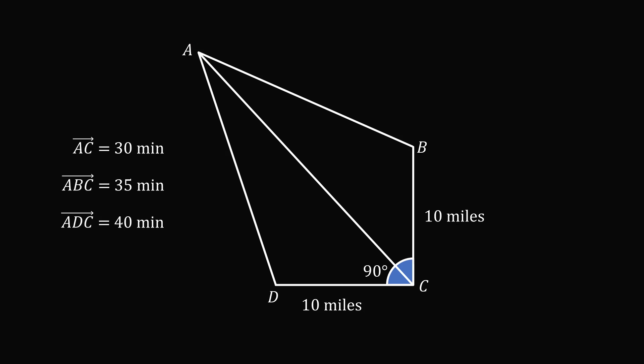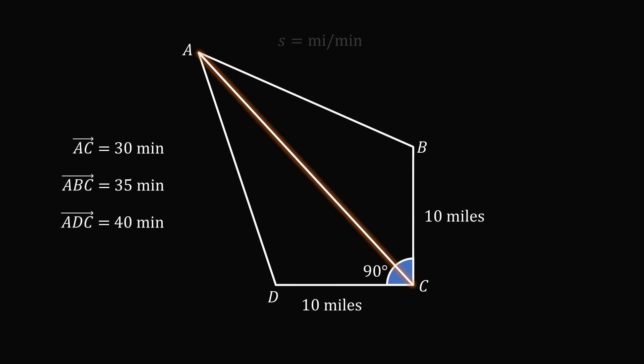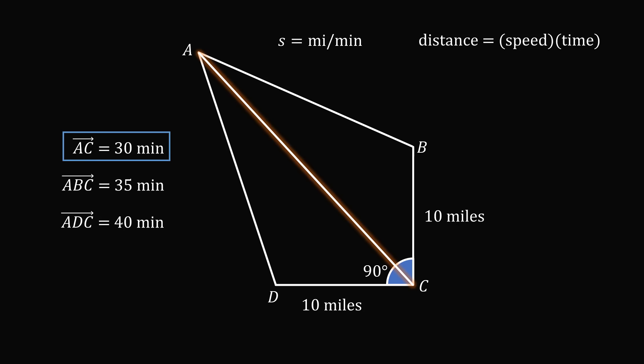So how can we solve this problem? We will get started by solving for the remaining distances based on the given information. We need to calculate the length of AC, AB, and AD. Suppose S is the speed of the car in miles per minute. Using distance equals speed multiplied by time, AC is equal to S times 30, which means AC equals 30S.